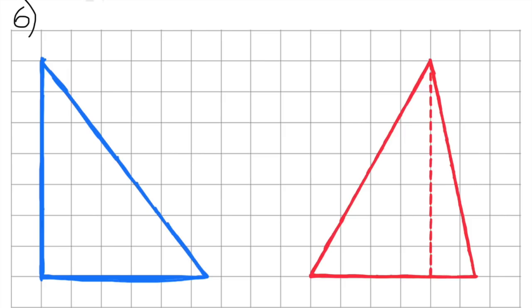Here I've drawn two triangles, both with a base of five-and-a-half units and a height of seven units. Both their areas are 19-and-one-fourth units squared.